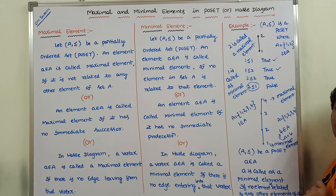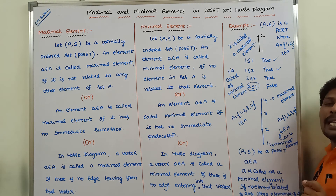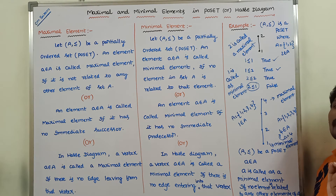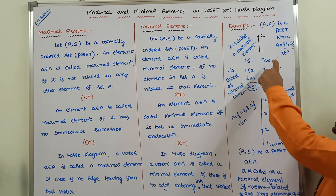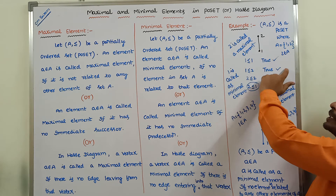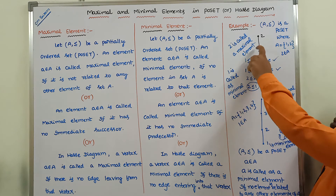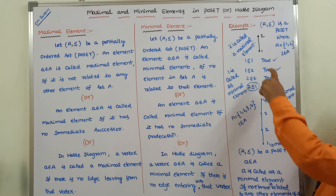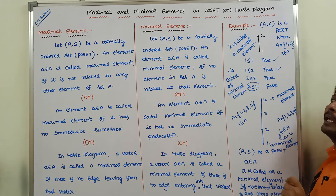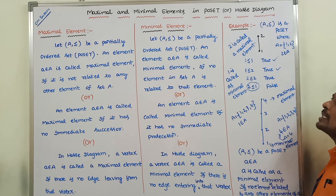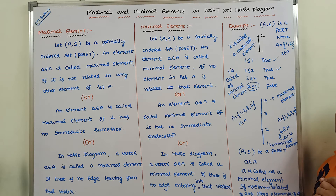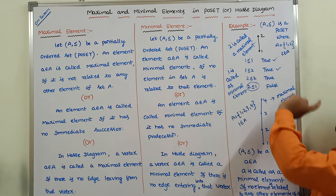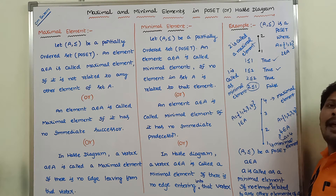Another definition for minimal element: an element small a belongs to capital A is called a minimal element if it has no immediate predecessor. Here, in this example, for element 1, there are no predecessors. Predecessors means any vertices that are there at the bottom connected with edges. Element 1 does not have any immediate predecessor. The immediate predecessor of element 1 does not exist. Hence, we can say that element 1 is called a minimal element.